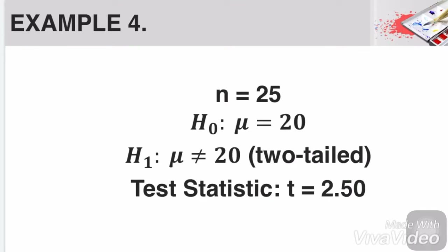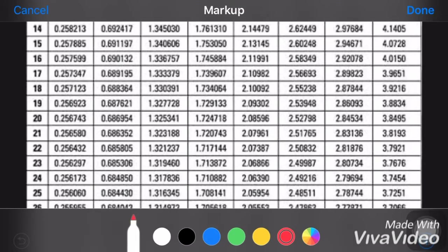Example number 4. N equals 25. The null hypothesis states that mu is equal to 20. The alternative hypothesis states that mu is not equal to 20. Since it has a not equal to sign, then this means that it is a two-tailed t-test. Our computed test statistic is 2.50. If n is equal to 25, then our degree of freedom is 24, that's n minus 1.